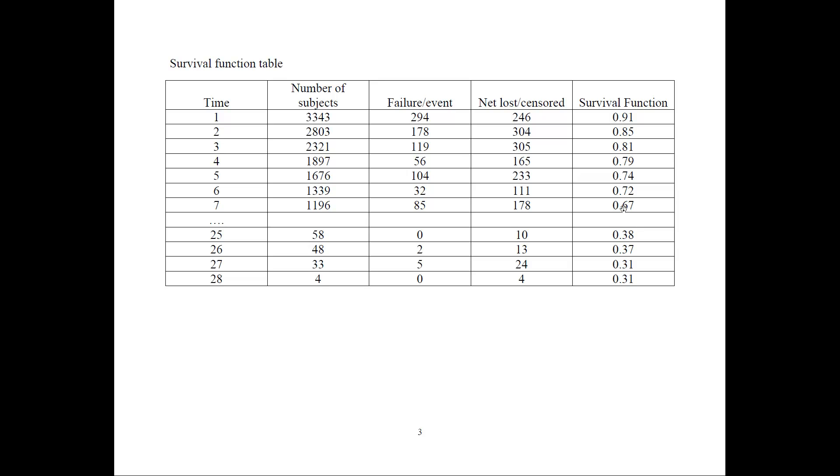So if we go all the way down, we could see that in the last 28th period, we only had four subjects. None of them experienced the event, and we all lost them to censoring. And the survival rate is 0.31. So 31% of the sample were still unemployed as of the end of the study, and we would see that number show up later in the figures.